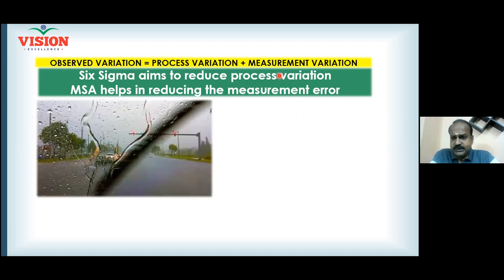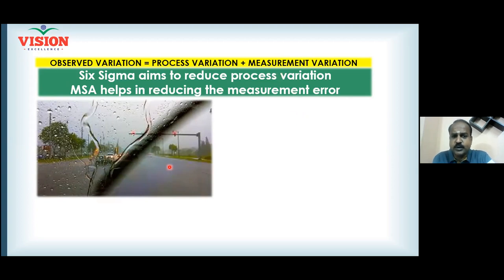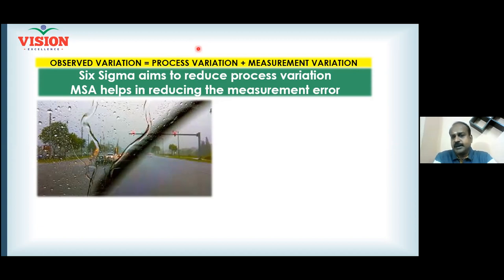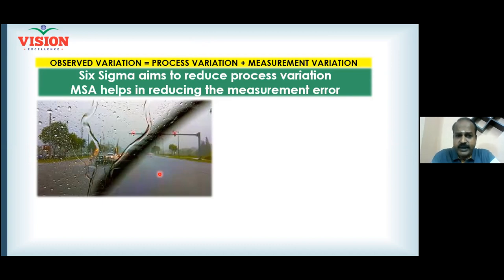Doing a Six Sigma project is like driving a car at 100 km/h to reach a destination — you must continuously keep your focus on the road. Similarly, in a Six Sigma project your focus must be on the problem, which is process variation. If you can't focus on the road, you may reach your destination late or not at all — likewise, if you can't see the process variation clearly, your project will not succeed.